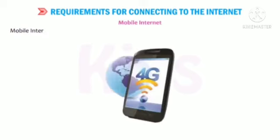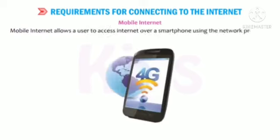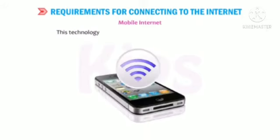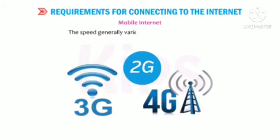Mobile Internet allows the user to access the internet over a smartphone using the network provided by the phone service provider. This technology provides high speed wireless internet access. The speed generally varies between 2G, 3G and 4G.